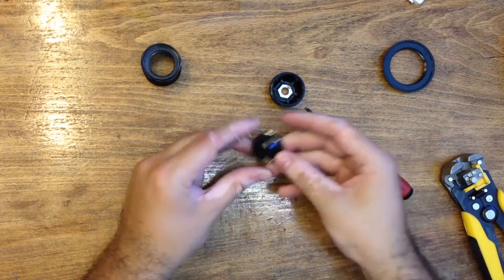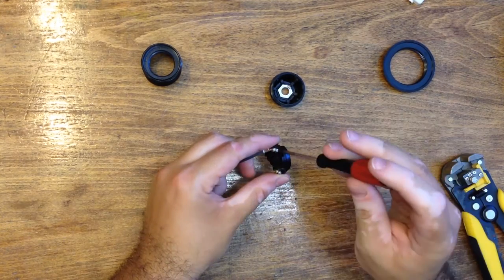With the socket taken apart, I strip the ends of the electric cable and screw it into the socket screws.